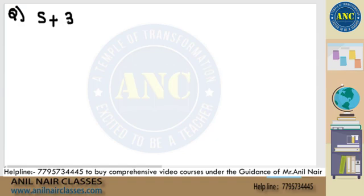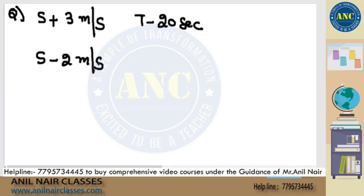Speed. Speed is increased by 3 meters per second, time is decreased by 20 seconds. Listen carefully. 20 seconds. Speed is decreased by 2 meters per second, time period is increased by 20 seconds. Find speed, find distance, and find time.